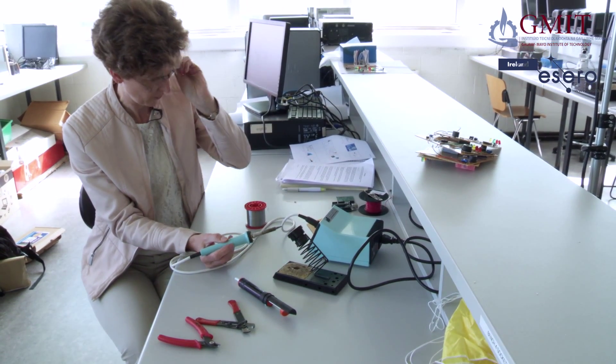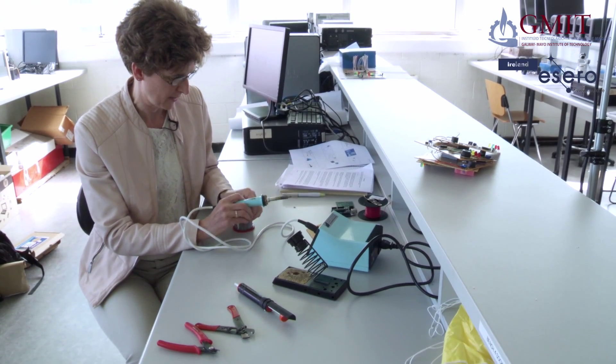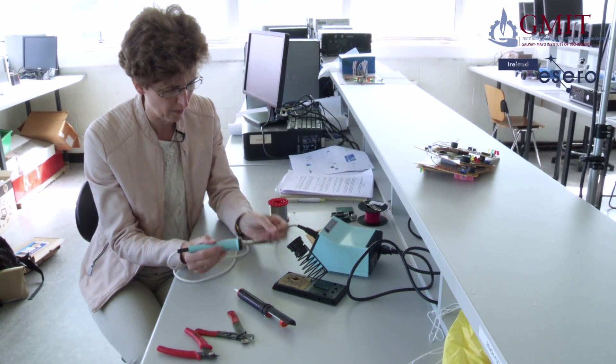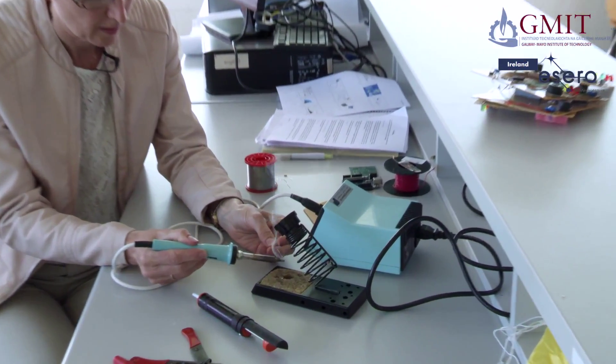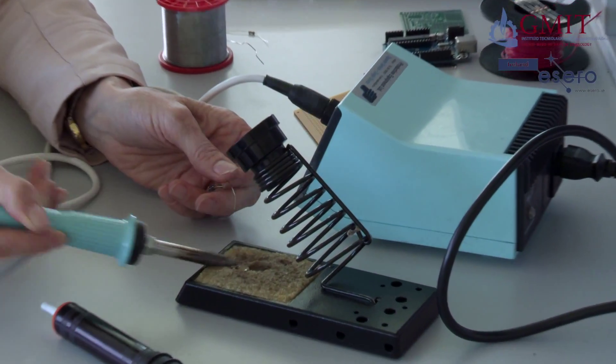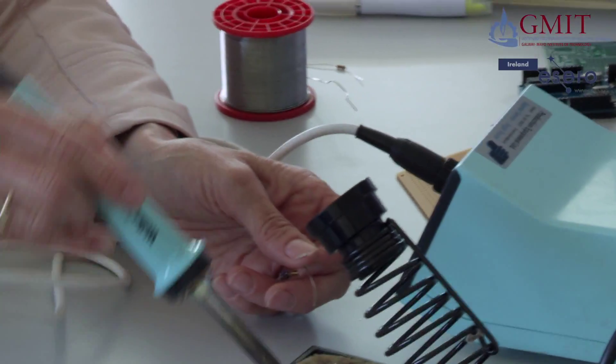When you're ready to go, once it's hot, you can tin the tip of the soldering iron just by melting a little solder on the top of it. It helps it conduct heat better. So you have a nice shiny tip on it before you start.